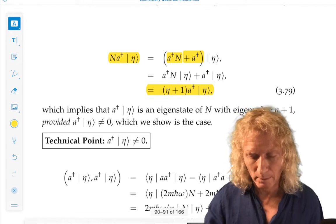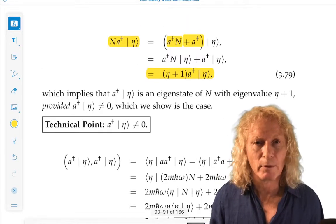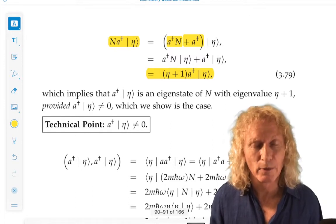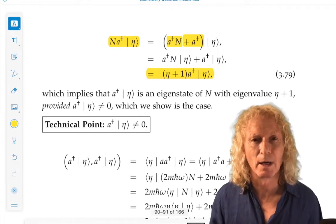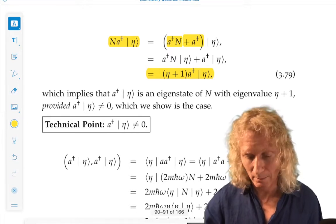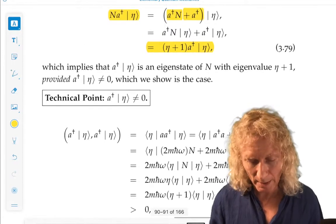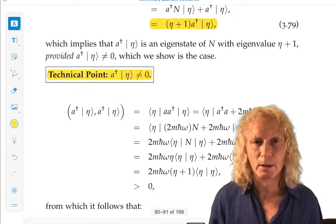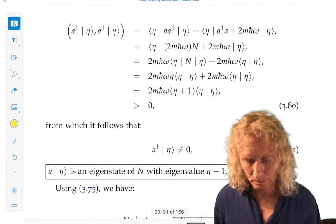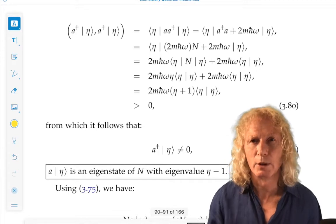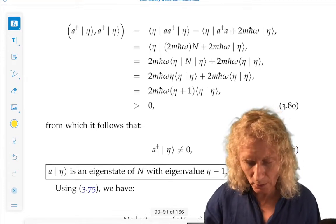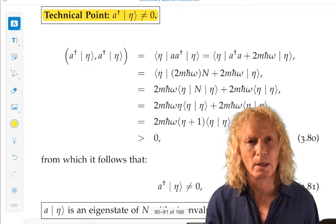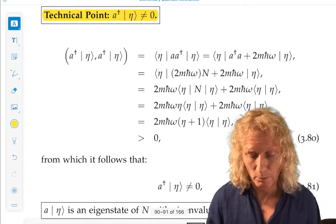Now there's a technical point. This would all be trivial or vacuous if a dagger eta happened to be zero, the zero vector, because zero vectors are eigenstates of anything. Well, we've got to rule that out, and we do that in this technical point, which I'm going to leave to you to work out. It's important that you actually work through this, because you're going to learn a lot using the commutation relations and the expressions that we've already derived. So, good exercise.